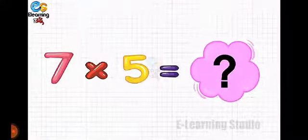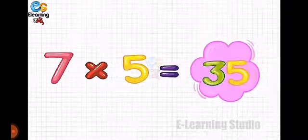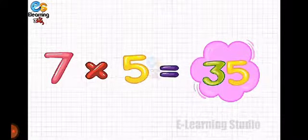Seven fives are — what is the right answer, children? Thirty-five is the right answer.